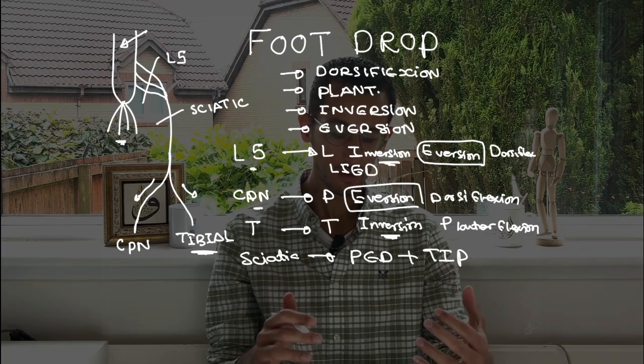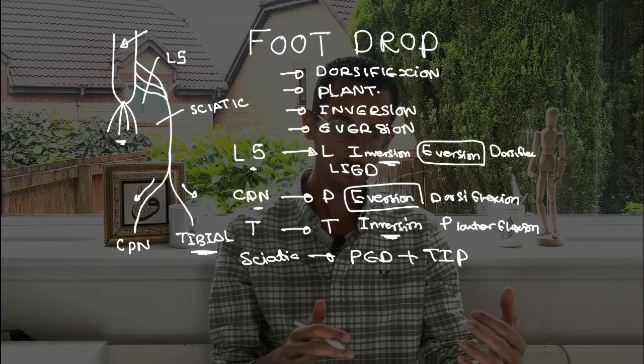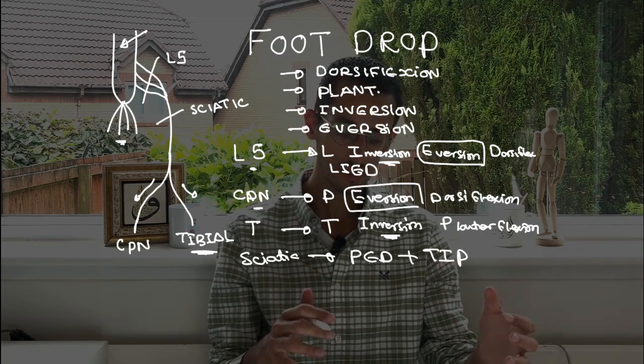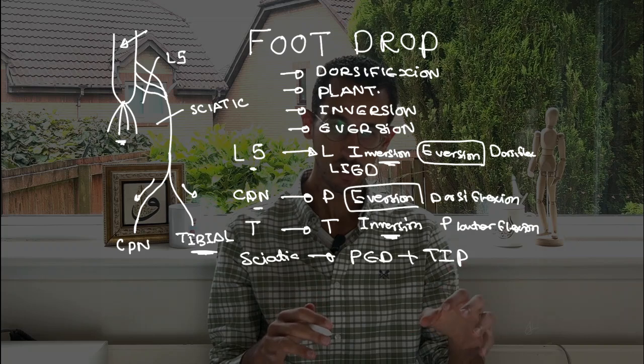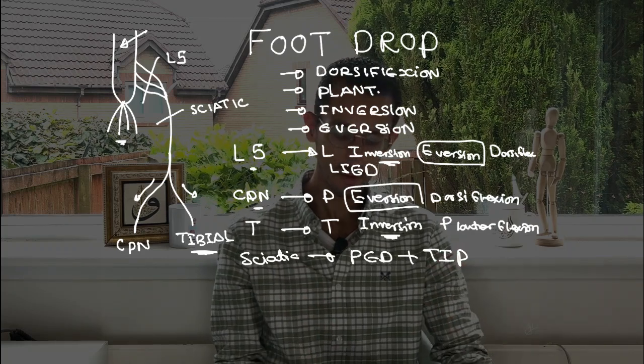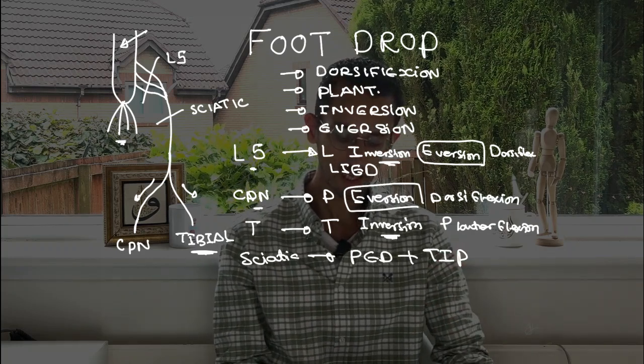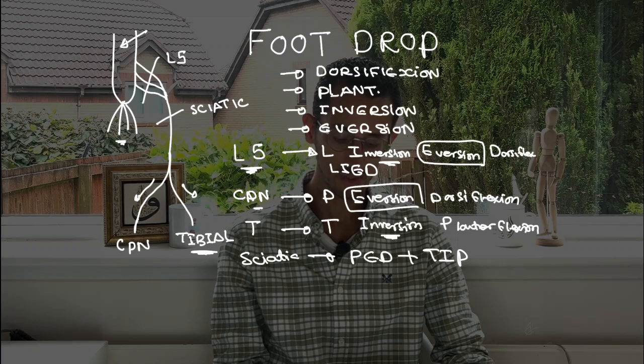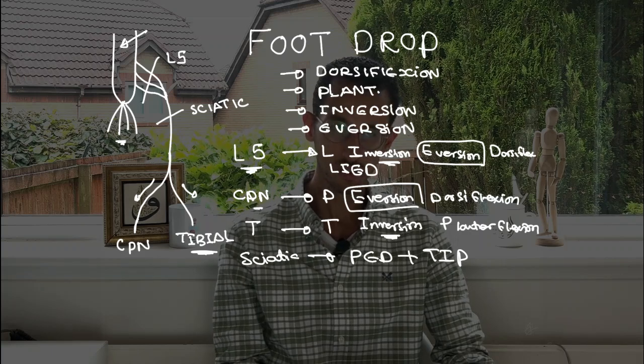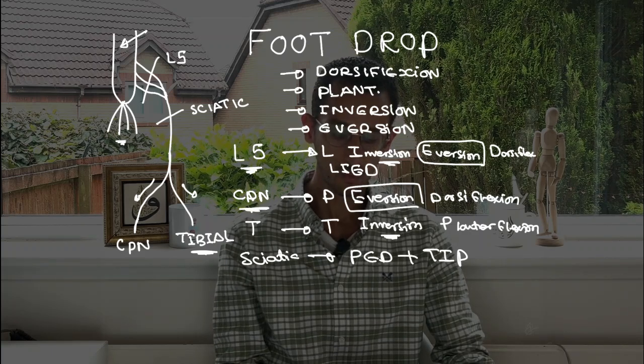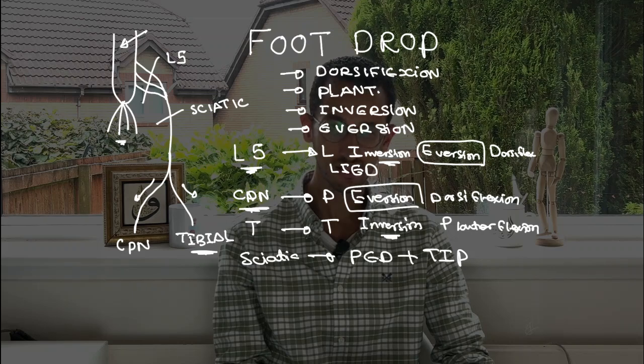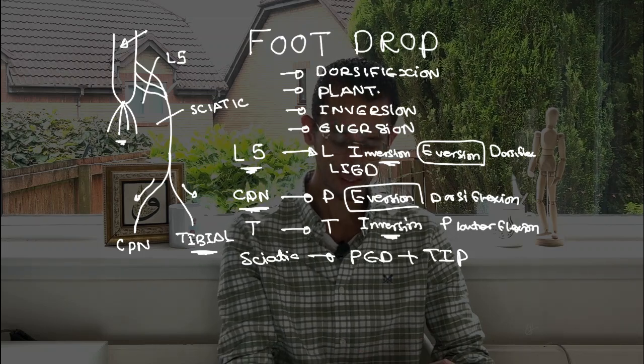So that now is very easy to remember and very easy to differentiate between the causes. If you think the patient has the inversion affected, then the foot drop is likely to be caused by the L5 nerve root, and that will differentiate that from the common peroneal nerve, where the inversion will be spared and will not be affected.